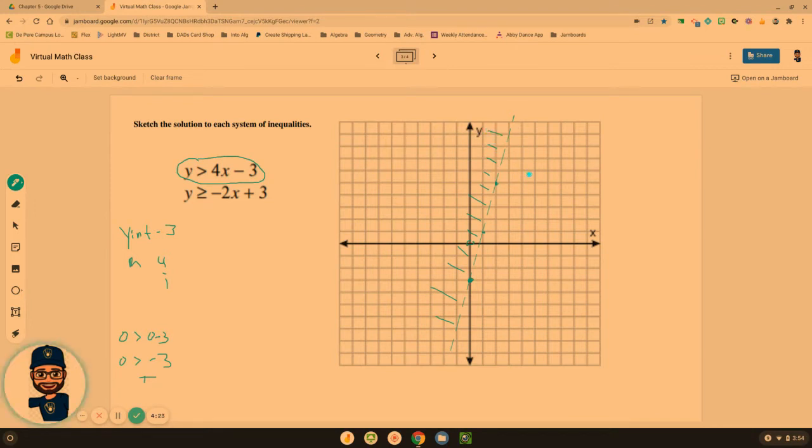Anything above that blue line would be an acceptable answer for this top inequality. However, we've got to do this again for the bottom one, which let's do this bottom one in red. Y-intercept 3, slope negative 2, or negative 2 over 1.